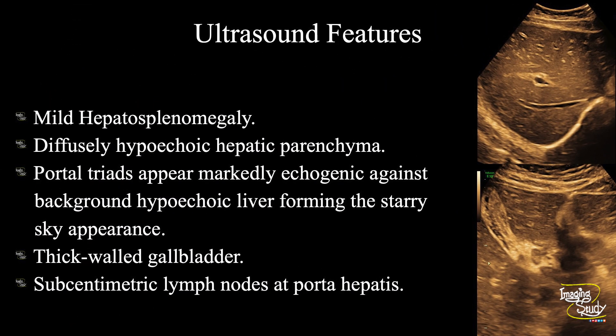So in summary, we have found mild hepatosplenomegaly. The hepatic parenchyma is diffusely hypoechoic. Portal triads appear markedly echogenic against the hypoechoic background liver, forming the typical starry sky appearance. There is a thickened and edematous gallbladder wall, and we have seen some sub-centimetric lymph nodes at the porta hepatis. These features concluded this to be a case of acute hepatitis.